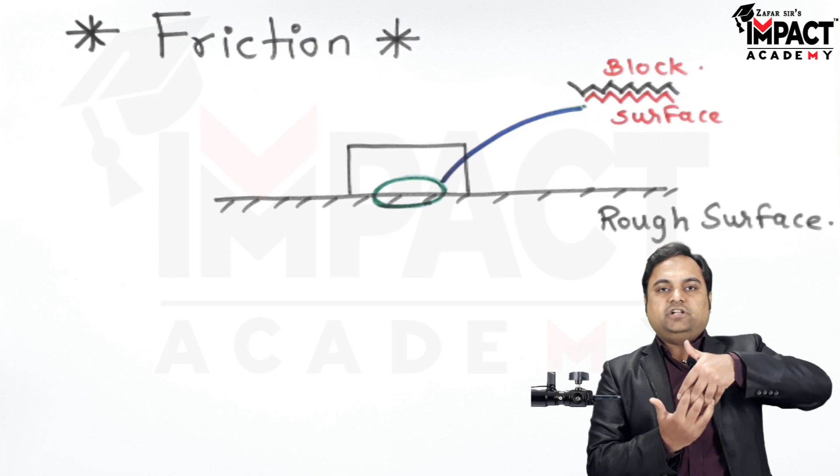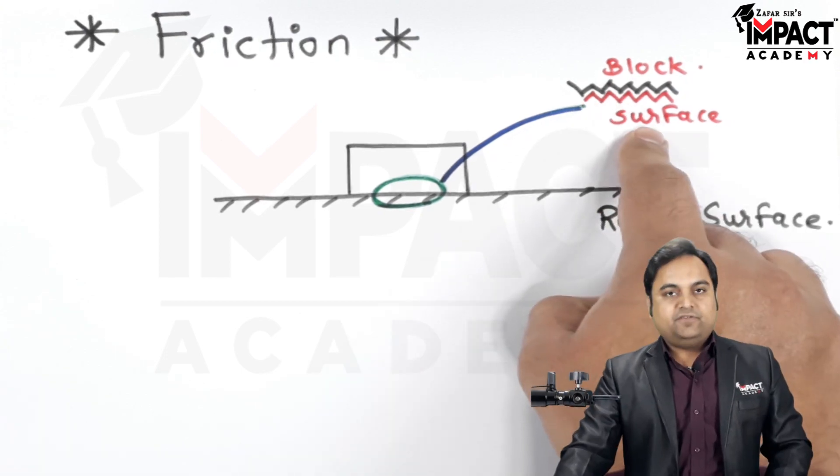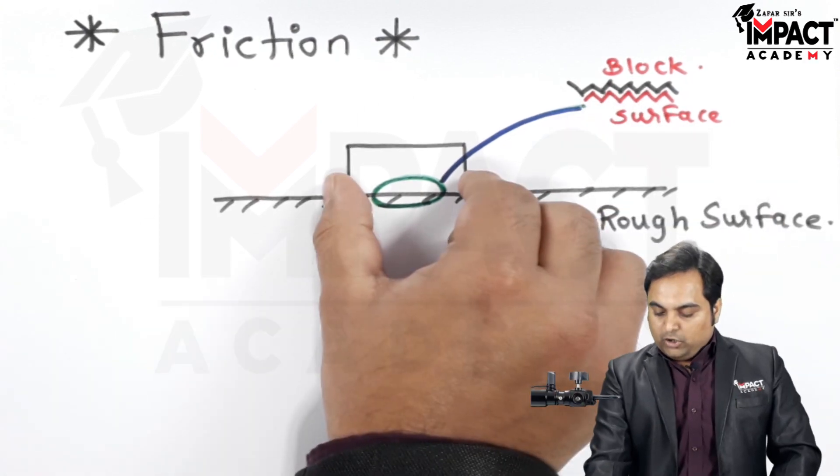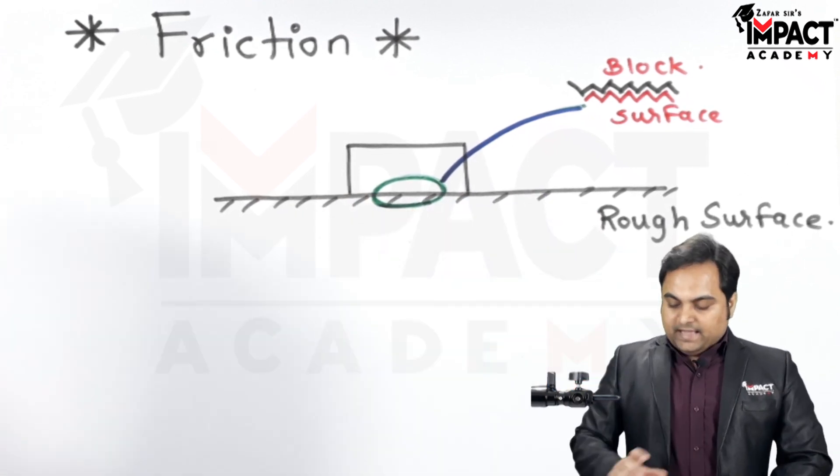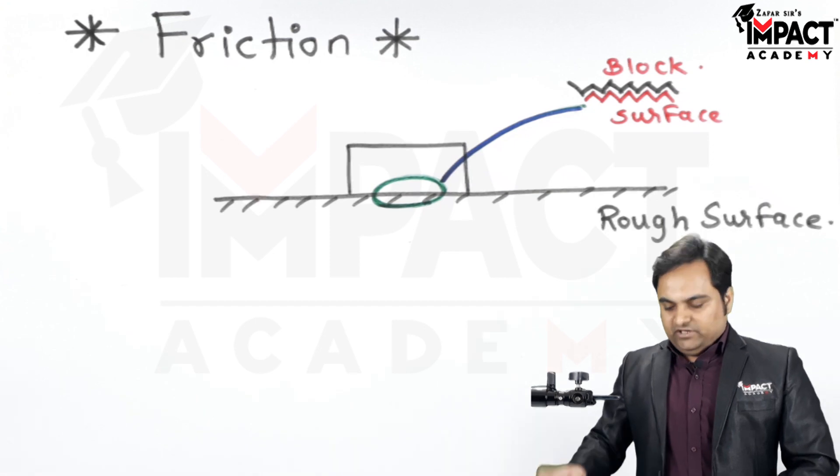It means there is an interlock between the block and the surface and because of this interlocking, the block would be stationary or it would be at rest and that is called as the equilibrium condition.